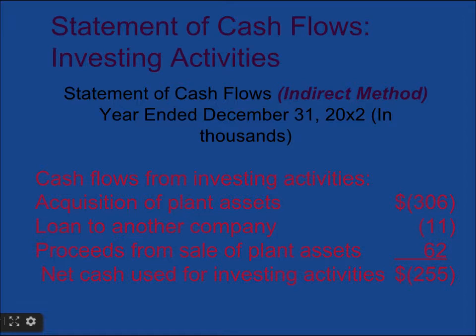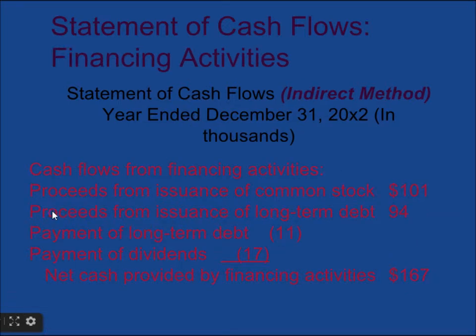Here is the statement of cash flow for the year ending 2002. Acquisition of plant assets has negative cash flow of $306, loan to another company is negative $11, and proceeds from sale of plant asset is $62, giving net cash for investing activity of negative $255. Investing and financing activities are the same for both direct and indirect methods. For financing activities, we find all activities and add gains and losses to get net cash provided by each activity.